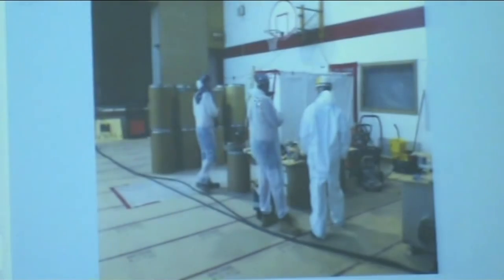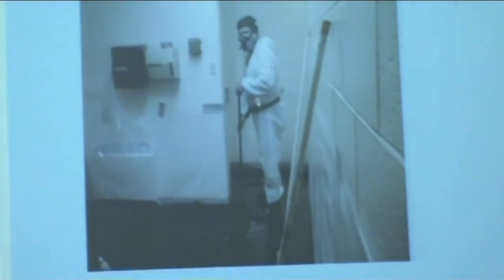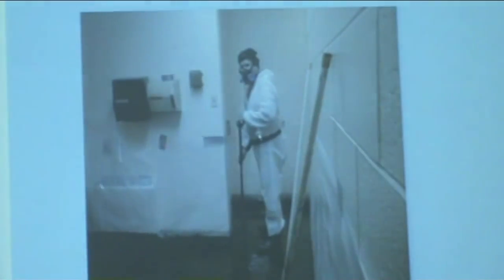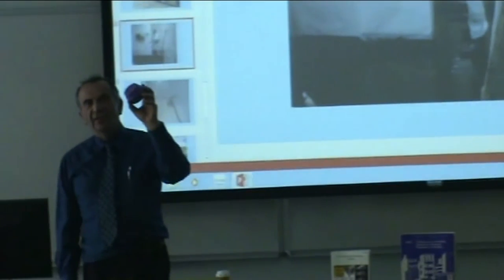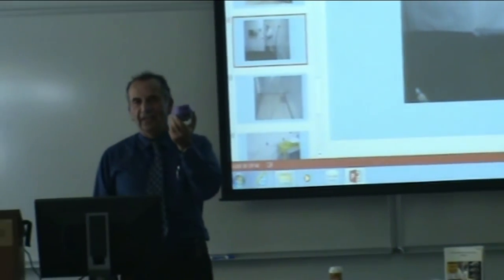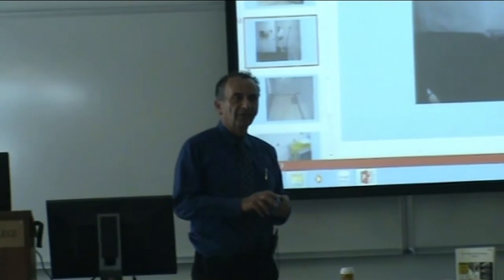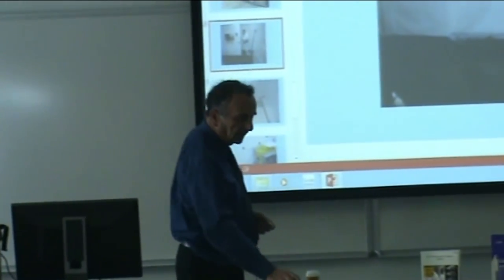Here we see the guys getting ready to go in, all suited up. Here is mastic removal — this guy is wearing a regular mask. Sometimes when working with mastic removal they use a special low-odor liquid. The mask I have also has a filter that filters out not just asbestos but chemicals too — so you don't have to breathe in those fumes.